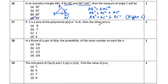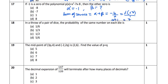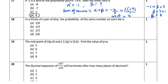Question 17: If −1 is a zero of polynomial x² − 7x − 8, find the other zero. Using sum of zeros formula: α + β = −b/a = −(−7)/1 = 7. Since α = −1, we get β = 7 − (−1) = 8. The other zero is 8, which is option D.